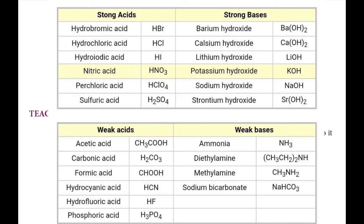Next, weak acids — these are partially ionized. Example: acetic acid, CH3COOH. Then strong bases are completely ionized. Example: NaOH (sodium hydroxide) and potassium hydroxide. Then weak bases are partially ionized. Example: NH4OH, ammonium hydroxide. This is the classification based on ionization.